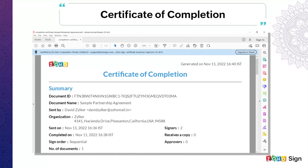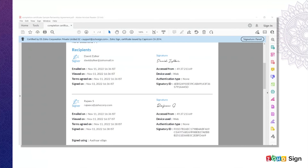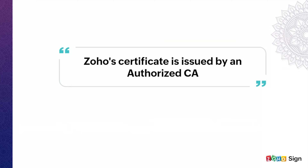In addition to the conditions specified under the law, here at Zoho Sign we provide a certificate of completion along with the signed document. This certificate of completion will contain details like the document ID, document name, who sent the document and to whom it was sent, when and where the document was signed, and at what time. This will prove as a valid audit trail when asked in court. The certificate that Zoho Sign uses for generating the final signed document is also issued by an authorized certification authority. In conclusion, Zoho Sign satisfies the requirements under the Information Technology Act and fully complies with it.